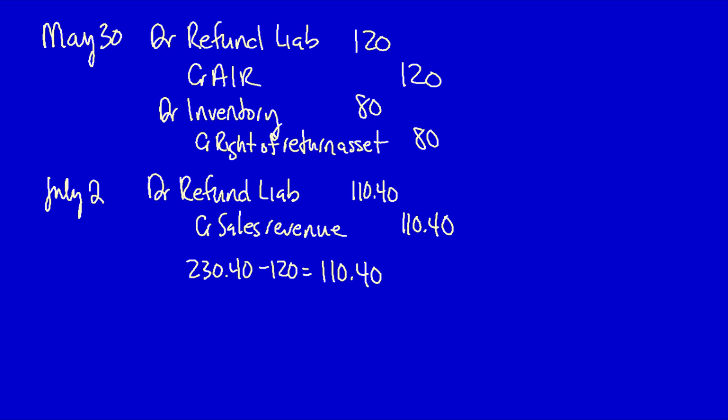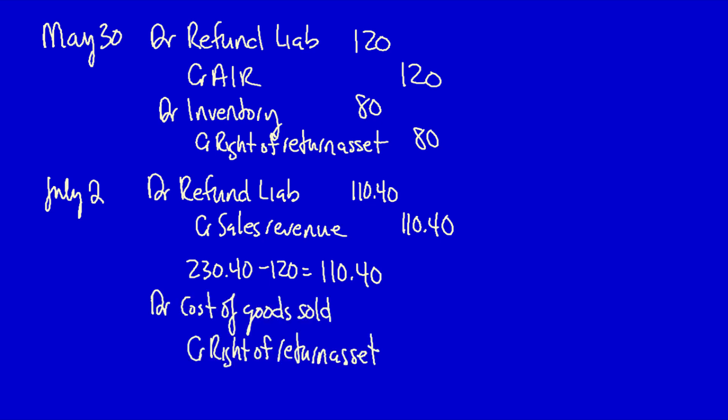The right of return asset also disappears and becomes cost of goods sold expense, since all remaining product has been definitively sold. The original balance was one hundred and fifty-three dollars and sixty cents, but after the May 30th return of eighty dollars, the remaining balance is seventy-three dollars and sixty cents. By the end of the right of return period, all revenue for boxes that can no longer be returned must be recognized, along with the related cost of goods sold. When BJB actually pays, we simply look at the outstanding accounts receivable balance.